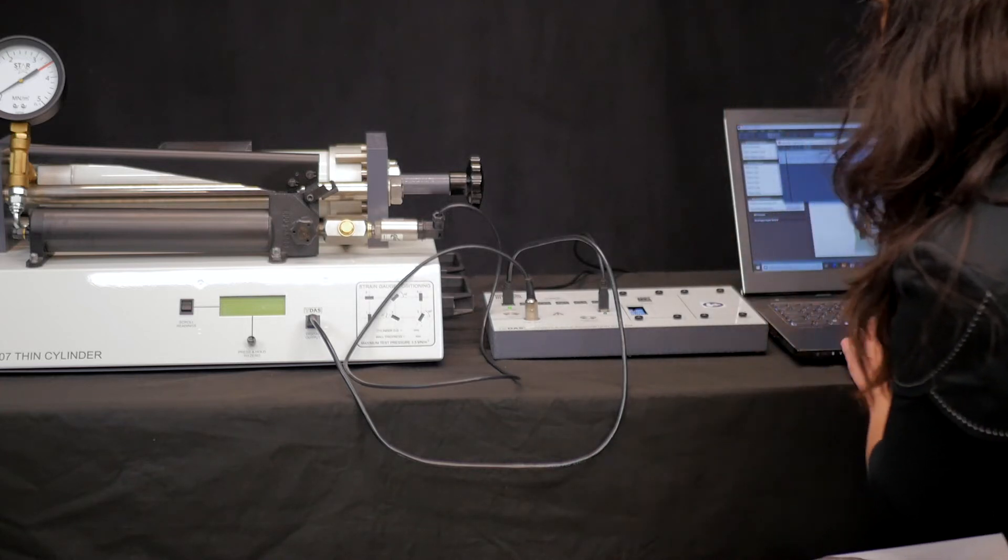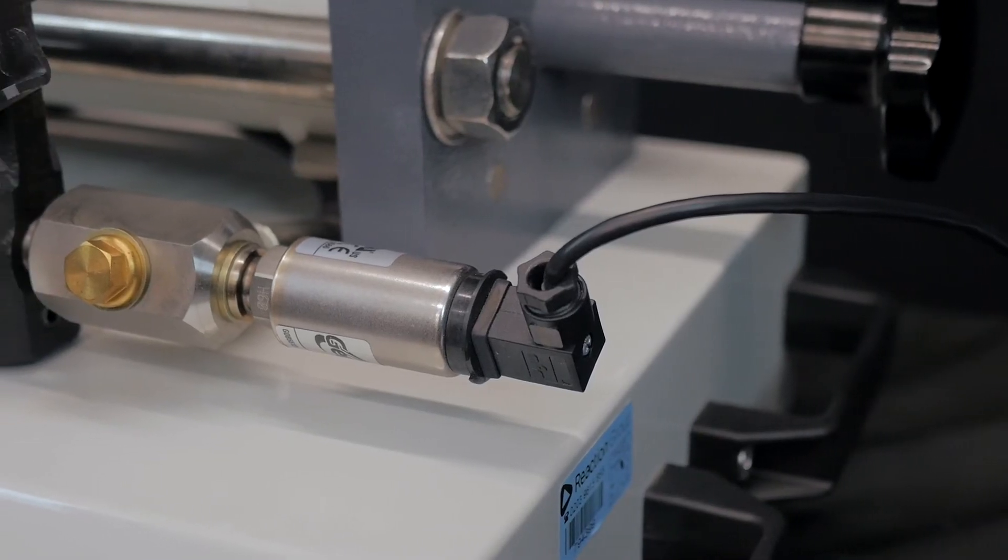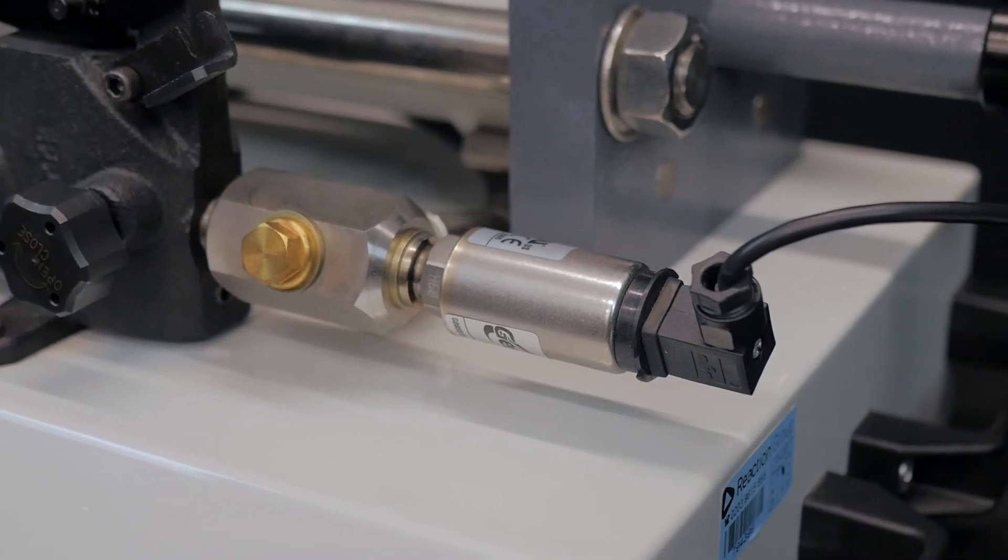By taking in all the variables from the strain gauges and the electronic pressure transducer, you can examine the longitudinal stress, that is the stress that runs along the cylinder length, the hoop stress, which is the stress around the diameter of the cylinder, and the radial stress, which is the compression of the walls of the cylinder.